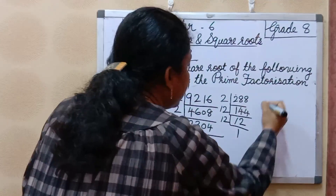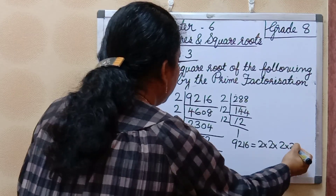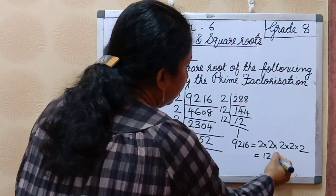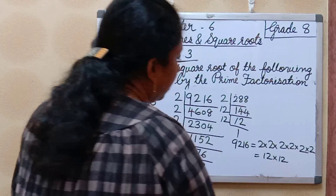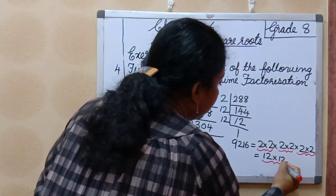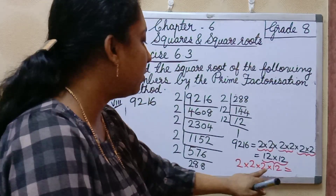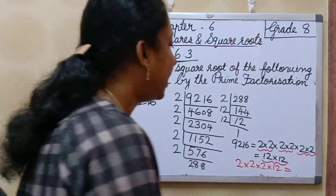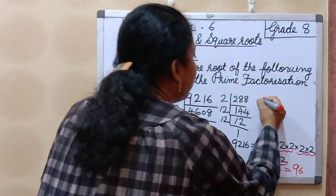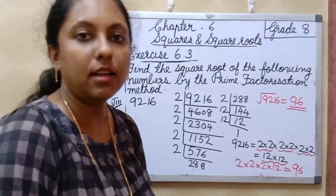So 9216 we can write as 2 × 2 × 2 × 2 × 2 × 12 × 12. Taking one number from each pair: 2 × 2 × 2 × 12. So 2 × 2 = 4, 4 × 2 = 8, 8 × 12 = 96. So the square root of 9216 is equal to 96.